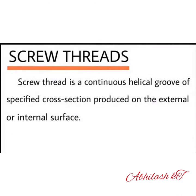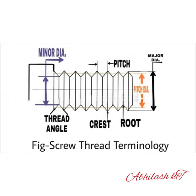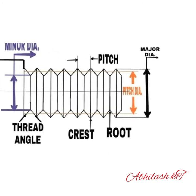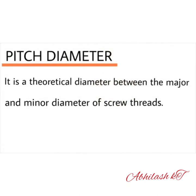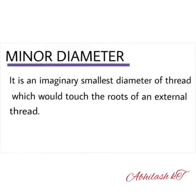A screw thread is a continuous helical groove of a specified cross section produced on the external or internal surface. Major diameter is the imaginary largest diameter of a thread which would touch the crest of an internal or external thread. Pitch diameter is the theoretical diameter between the major and minor diameter of a screw thread. Minor diameter is the imaginary smallest diameter of a thread which would touch the roots of an external thread.